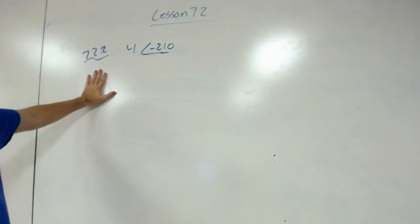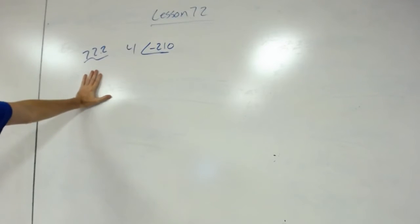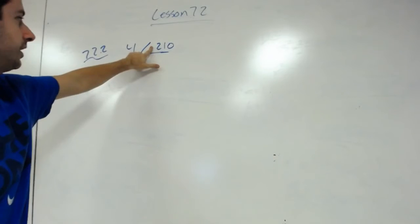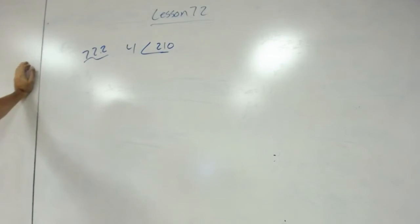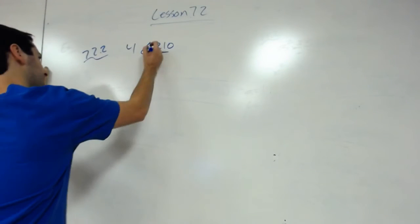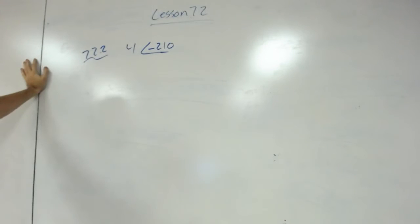We're looking at example 72.2. Previously we've had rectangular coordinates where we had it look like 4 at 210 degrees. We've done stuff like that, but now it makes it a negative angle.